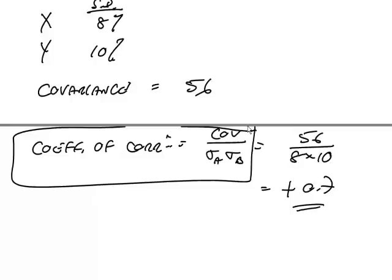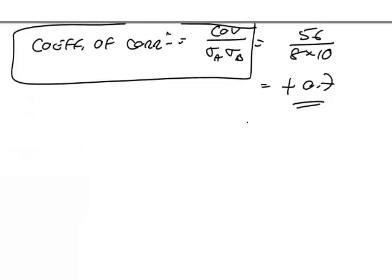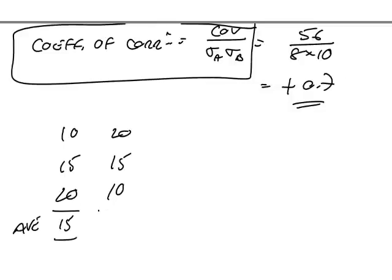The covariance can be negative. Do you remember the ice cream business? Where you had 10, 15, 20 for one investment and 20, 15, 10 for another. If I wanted to know the coefficient of correlation using the covariance, divided by some deviations — what they do is they work out the average for each of them. The average for this one is 15 and for that one is 15.